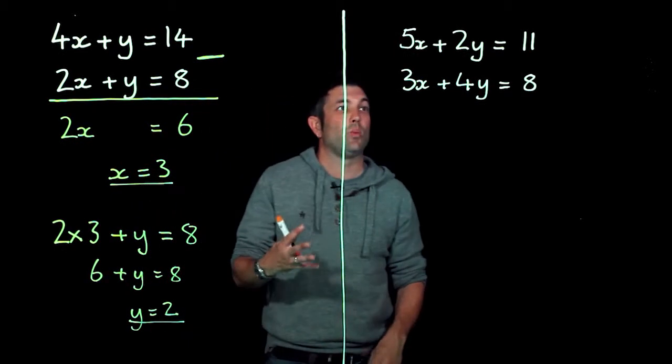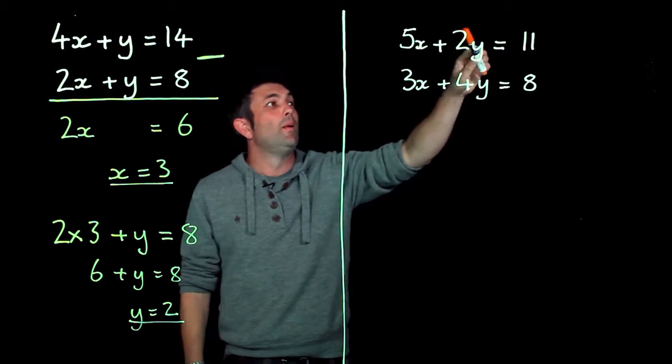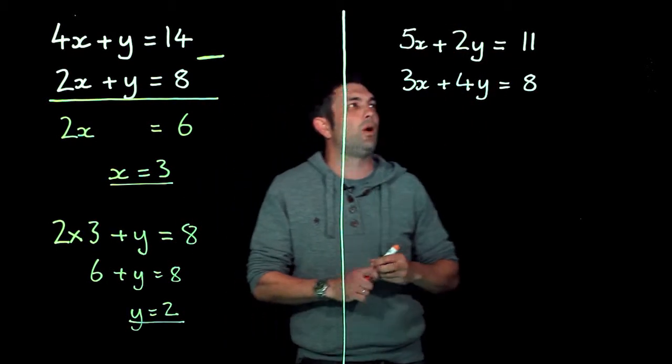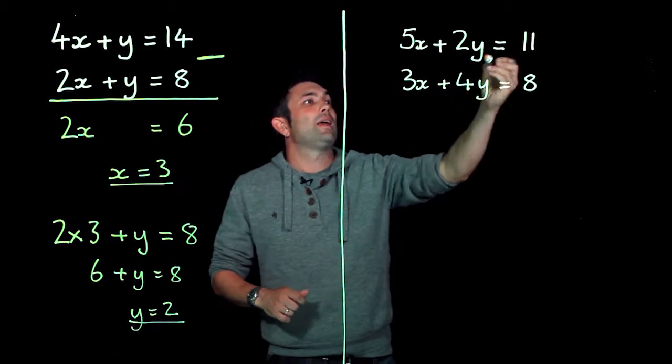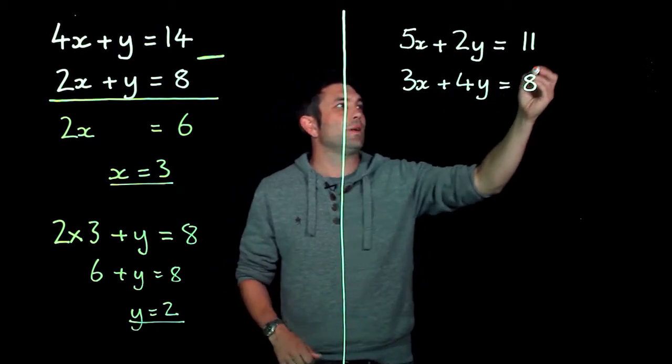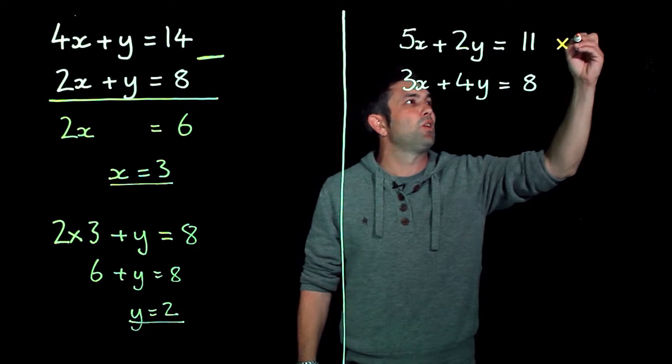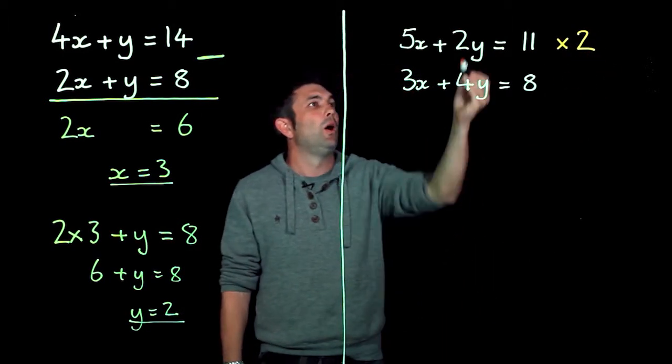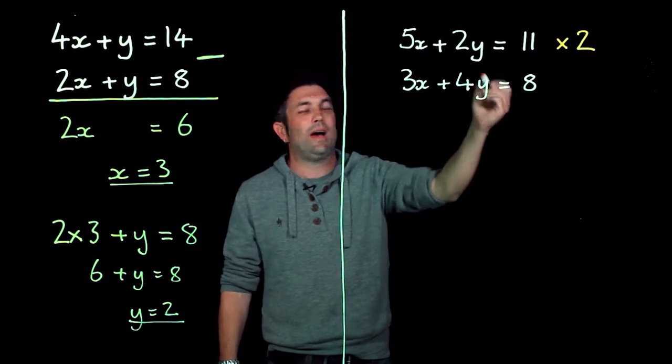Now on the second one you'll notice I'm going to get rid of y again, but I haven't got the same amount of y in each case. So can I get the same amount of y's by multiplying through by something? I can. If I multiply this top one by 2, I'll end up with 4y's which is what I have in here.